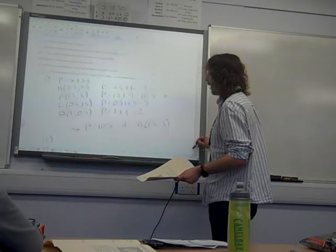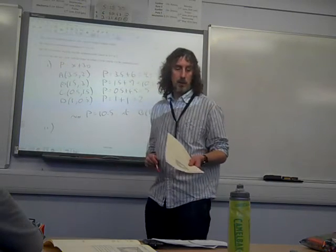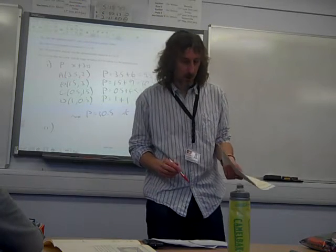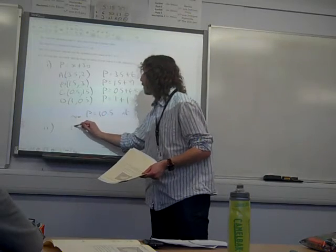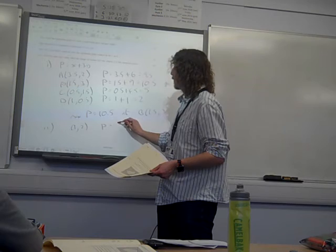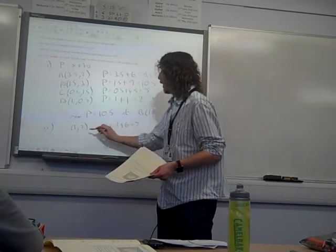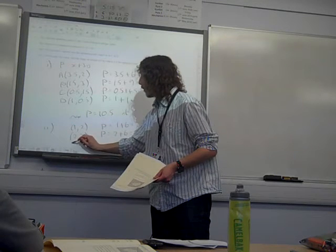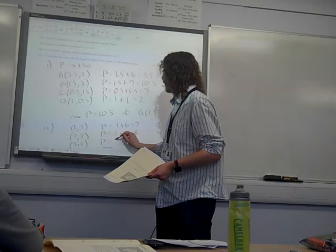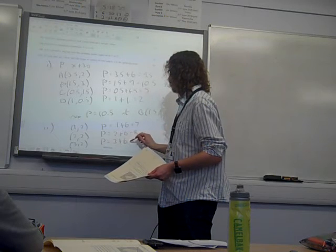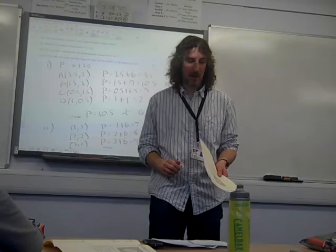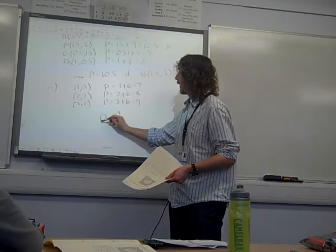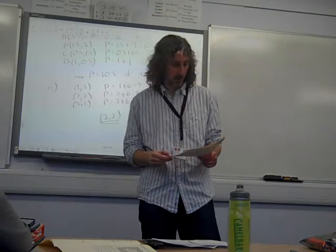Let's check these out. The point (1, 2): P gives us 1 plus 6, which is 7. The point (2, 2): P is 2 plus 6, which is 8. And the point (3, 2): P is 3 plus 6, which is 9. It's clearly the point (3, 2). I probably didn't need to do that much working out, but there we go — that's the best integer value.